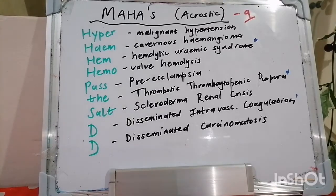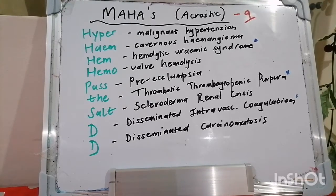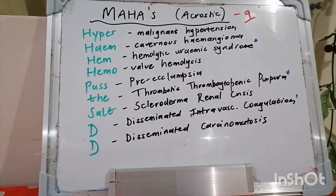So let's get into MAHA. Microangiopathic hemolytic anemia — what is this? MAHA is also termed fragmentation hemolysis and is characterized by non-immune hemolytic anemia, so often the Coombs will be negative, with schistocytosis. In your peripheral smear you will see schistocytes.